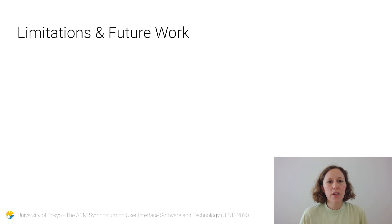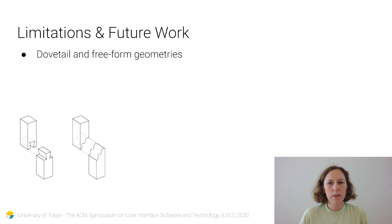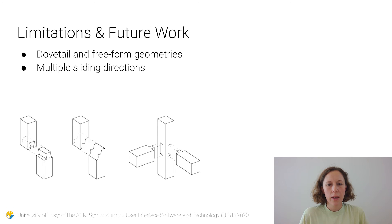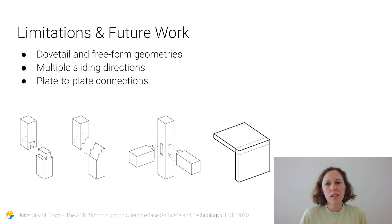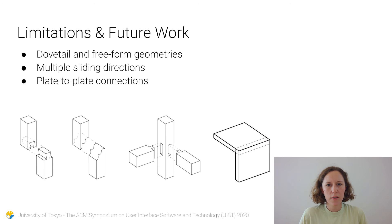As for limitations and future work: due to the voxelized geometric representation, it is not possible to make, for example, a dovetail joint or some free-form shape. It is also not possible to create multi-timber joints that have more than one sliding axis. And the system is made for frame structures — it does not fully extend to plate-to-plate connections.